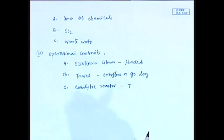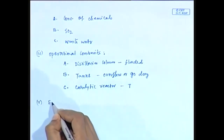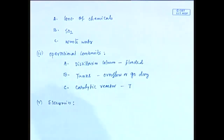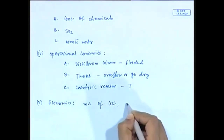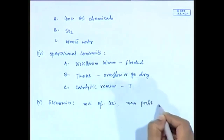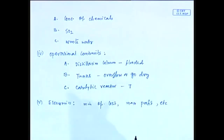The fifth requirement is economics. It is required to control the operating conditions at a given optimum level of minimum operating cost and maximum profit. For example, we need to judiciously use the raw materials, the energy used in the process, and the human labor, so that we can minimize the operating cost and maximize the profit. These are all the requirements to meet the plant objective.